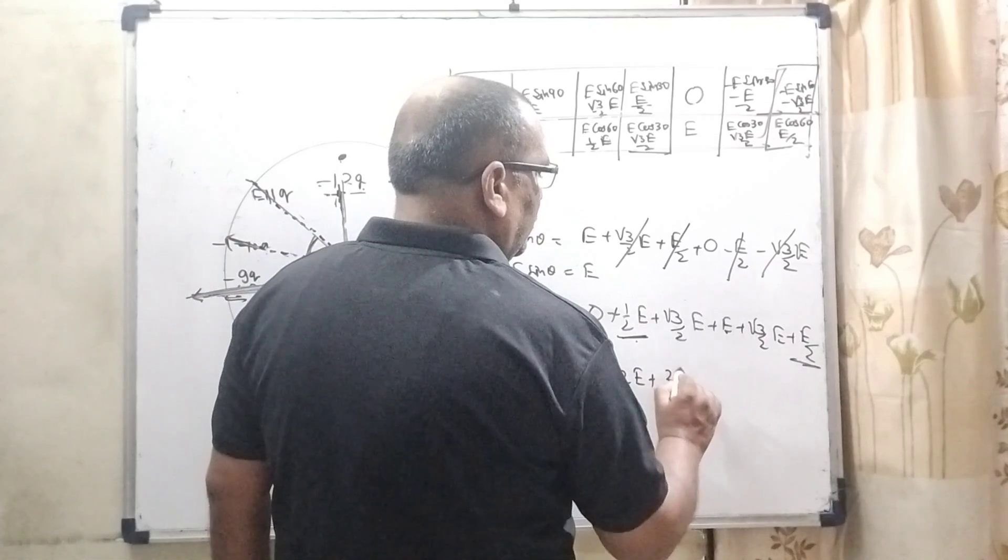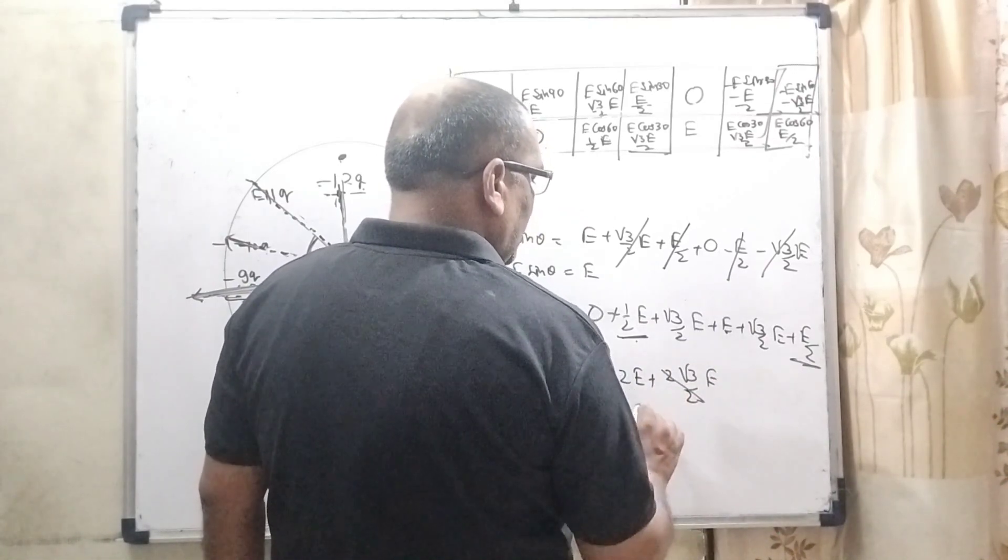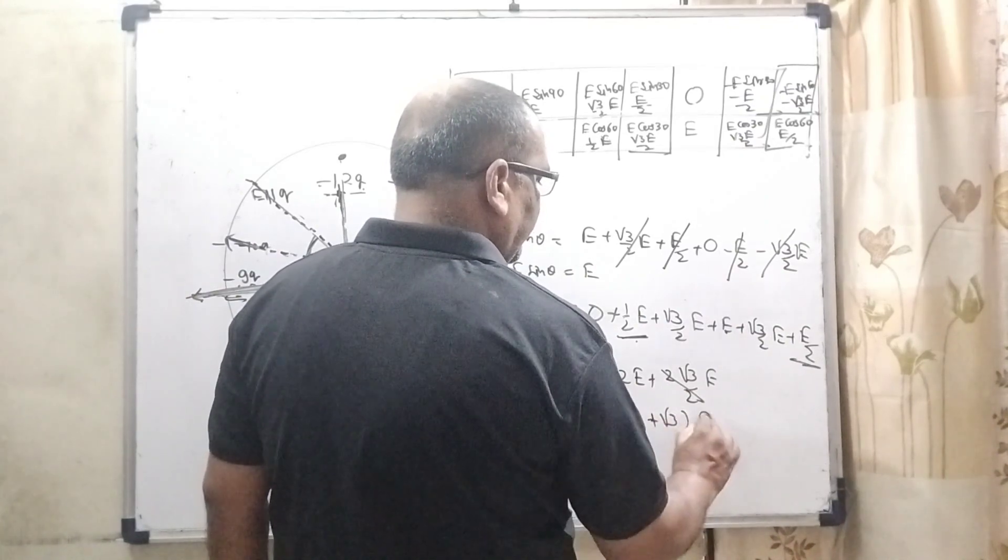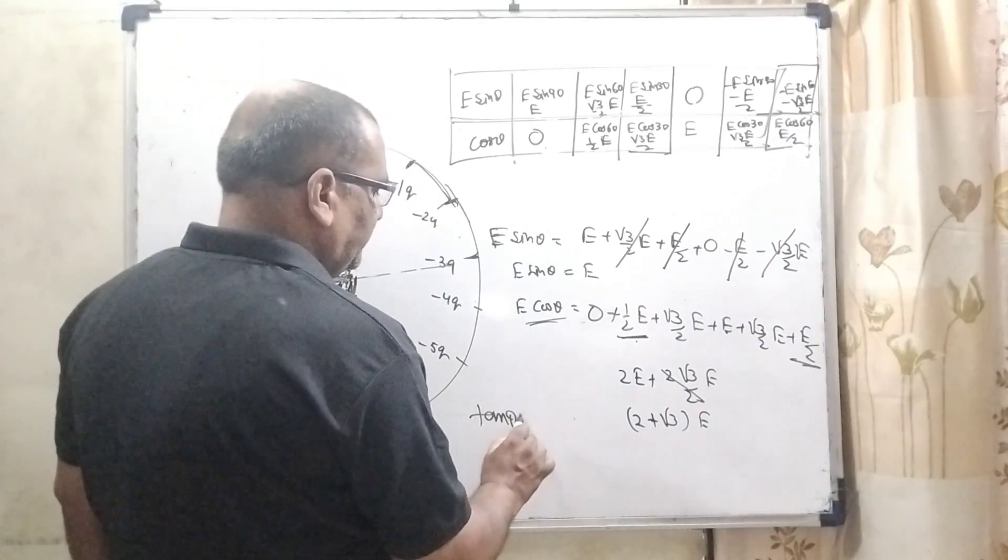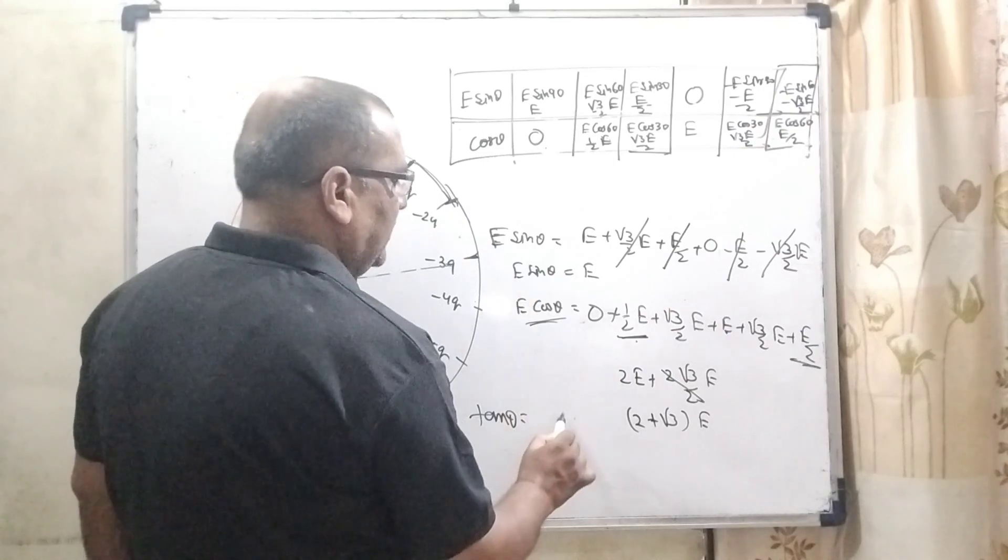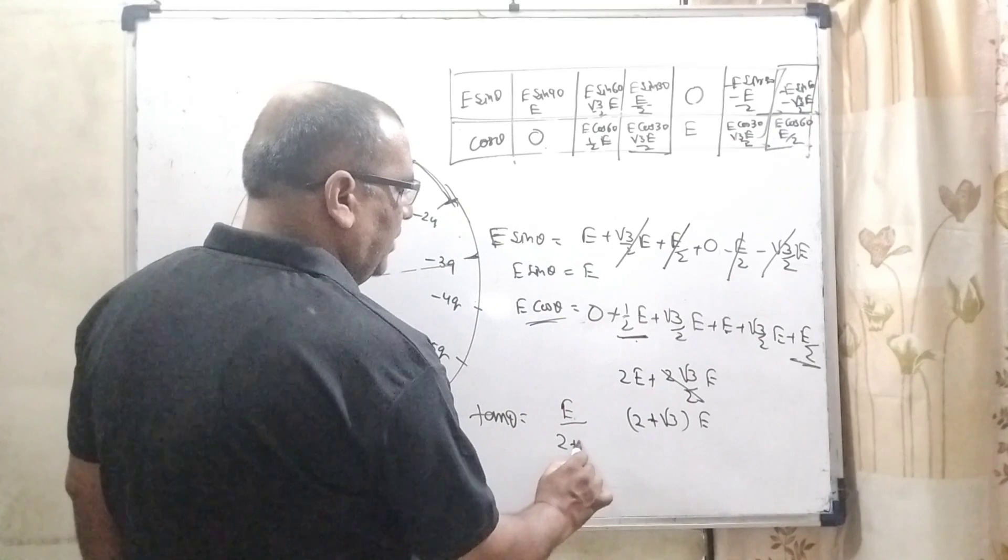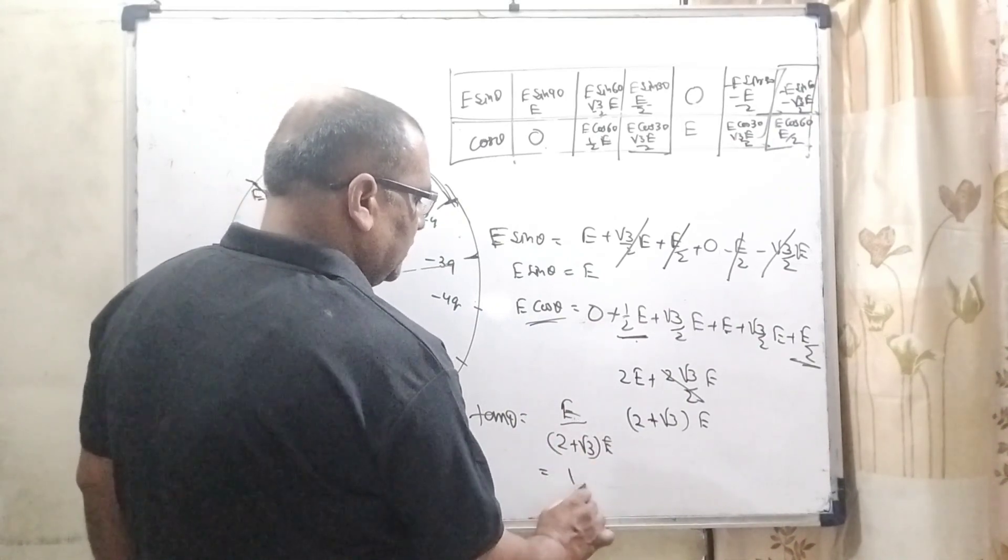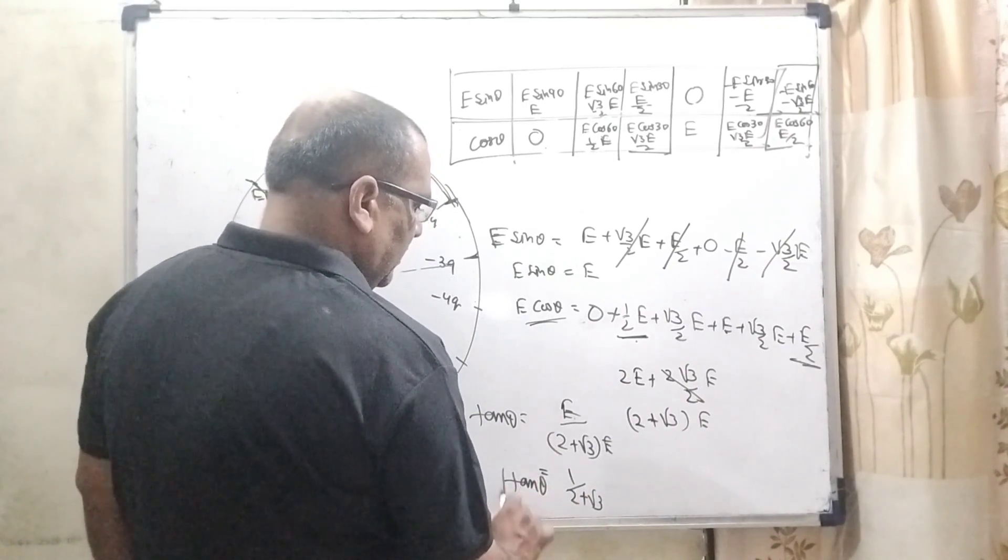And here 2 root 3 by 2 E, that is, net value is 2 plus root 3 E. This is the cosine component. So here tan theta, tan theta is E sine theta, that's value is E, and cosine component that is 2 plus root 3 E. So this value is 1 by 2 plus root 3, tan theta.